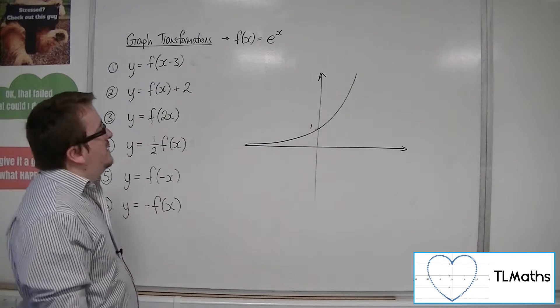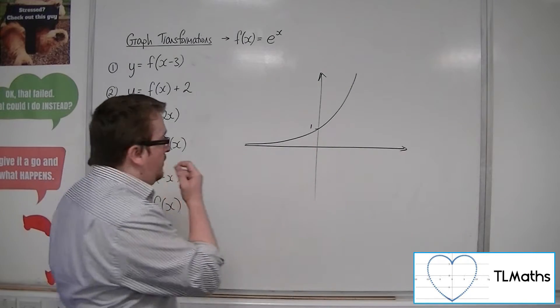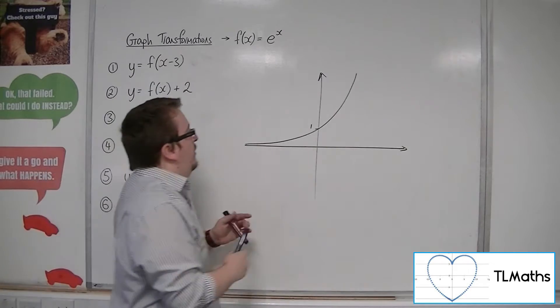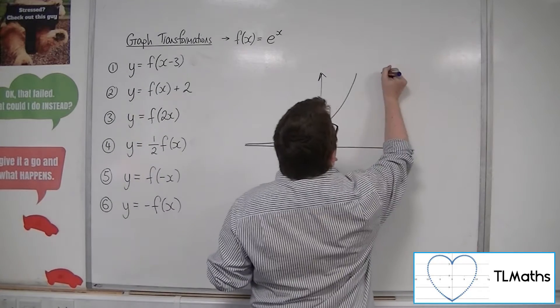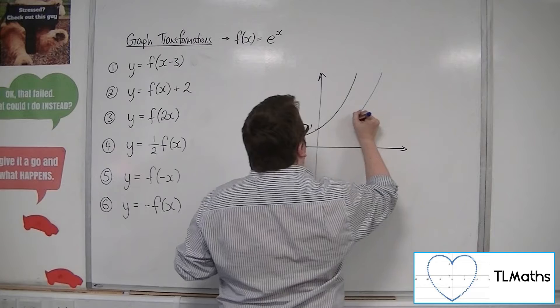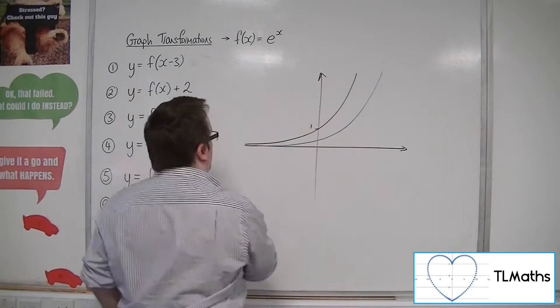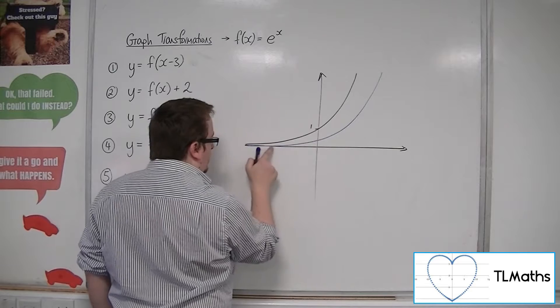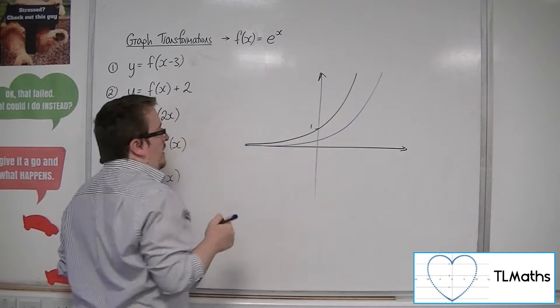Now if you translate it by the vector 3, 0, it shifts the whole curve 3 to the right. So we would be expecting this curve to look something like this. Shouldn't be crossing the x-axis there. Let's doctor it a bit.